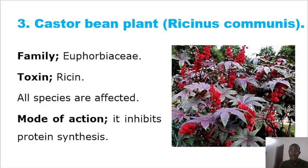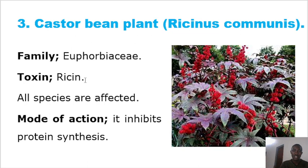The castor bean plant is also a common plant within the farmstead. It is from the family Euphorbiaceae — the same family that contains Euphorbia. The common toxin present in the castor bean plant is ricin, specifically ricin 1 and ricin 2. All species are affected. The mode of action is that ricin inhibits protein synthesis, making it cytotoxic.